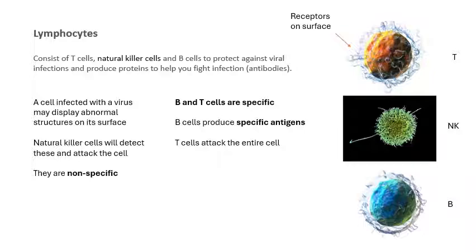Importantly, natural killer cells and neutrophils are non-specific — they don't just attack one type of pathogen. B cells and T cells, however, are specific: they attack only one type of virus. They have receptors on their surface, as shown in the diagram, which detect that particular virus — so they are specific.